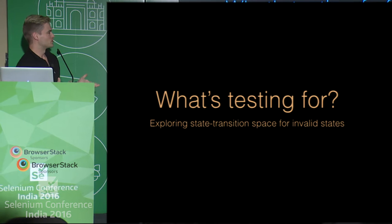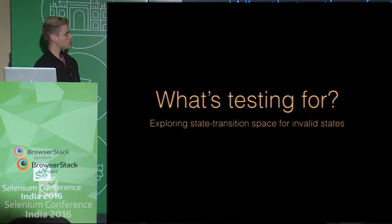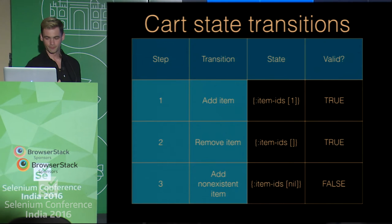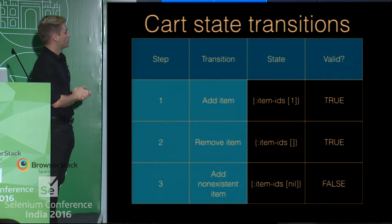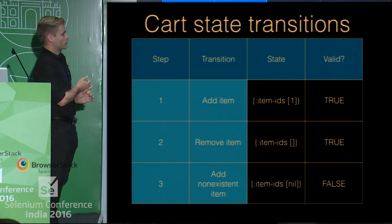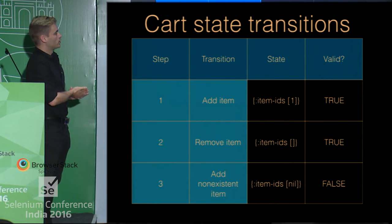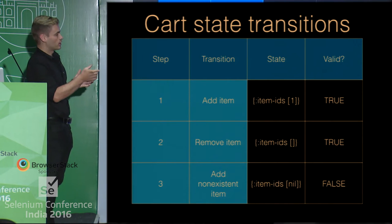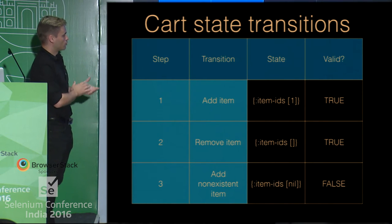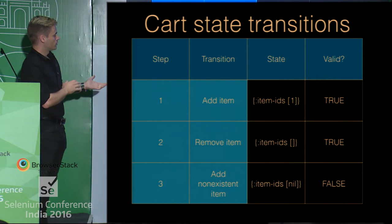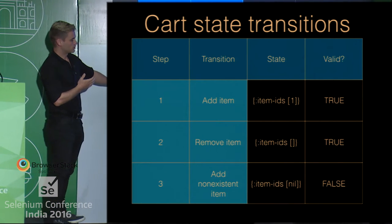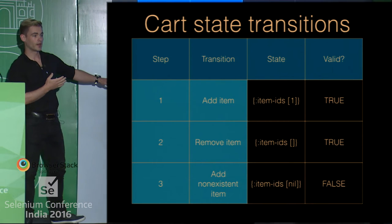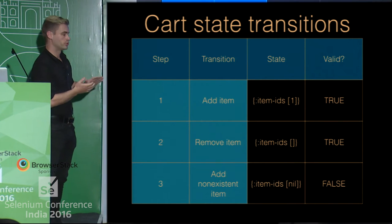I think you'll all agree that testing is for exploring state transition space for invalid states. It's a terrible definition, but it will help us think about this later. To give an example — imagine we have a simple cart on a site. Step one is we add an item, that updates our state. We can take that state and ask: is that state valid? We remove an item — still valid. If we add a nonexistent item, that is not valid. This is what I mean by a state transition which is invalid. We should not be able to represent this kind of thing in our code.